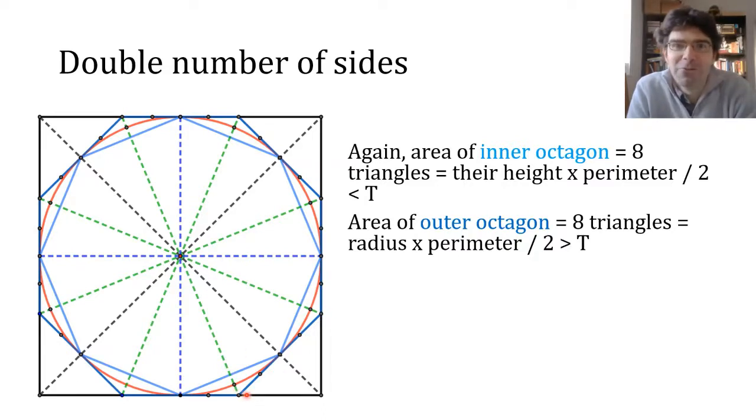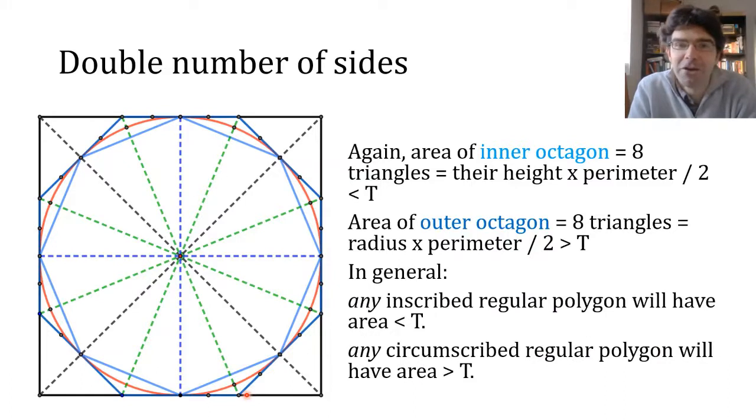And there's nothing special in what we've done so far about squares or octagons. In fact, any regular polygon inscribed in the circle is going to be composed of congruent triangles in this way, and their height is going to be less than the radius, and their perimeter is going to be less than the circumference, and so on. Same on the outside.